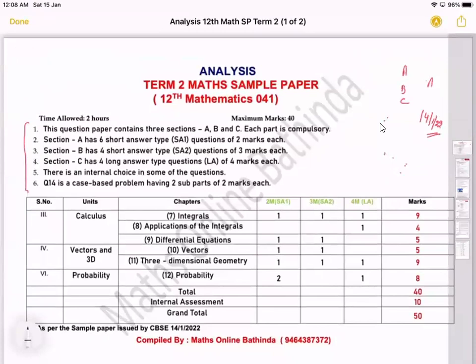It will consist of six short answer type questions, which will be known as SA1, and each question comprises of two marks. And the main point of this section is you will not get any internal choice in this section.